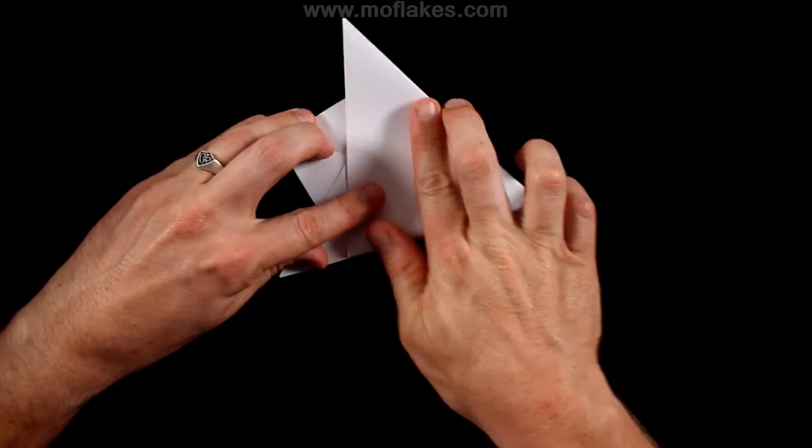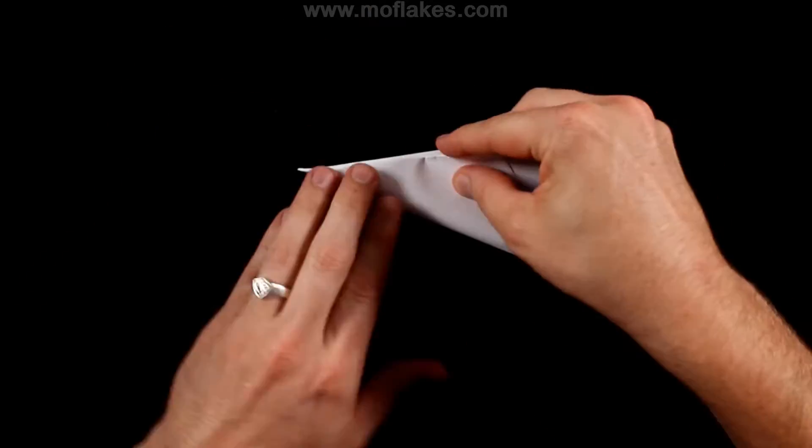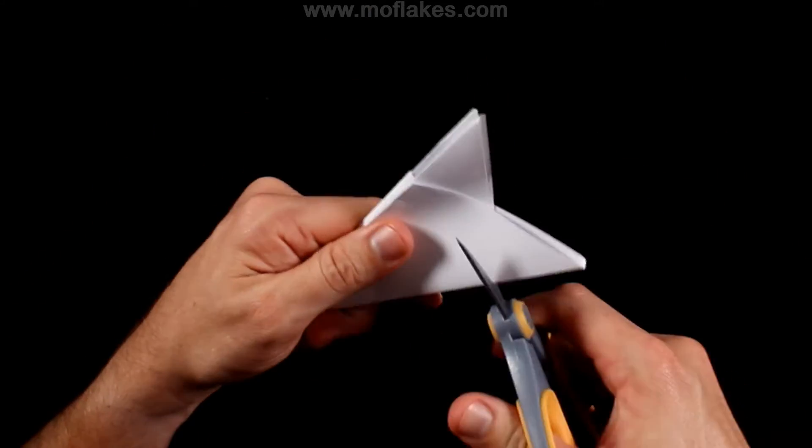Then you're going to use that center mark to fold it into thirds. You're going to fold it in half one more time, which will give you 12 layers of paper.